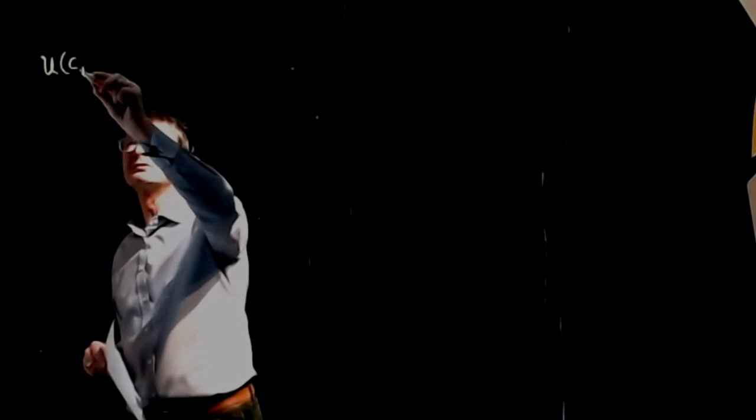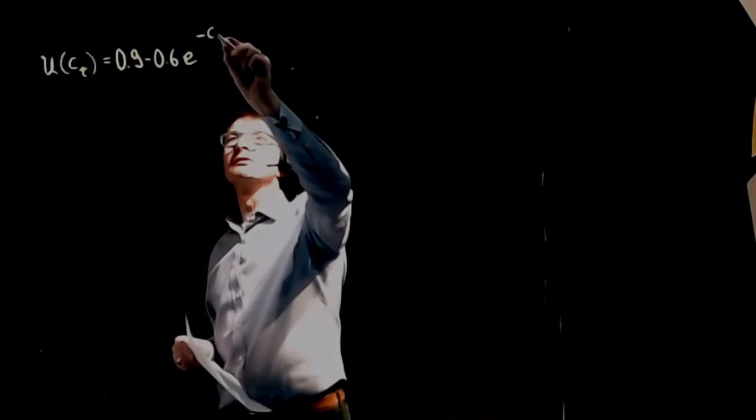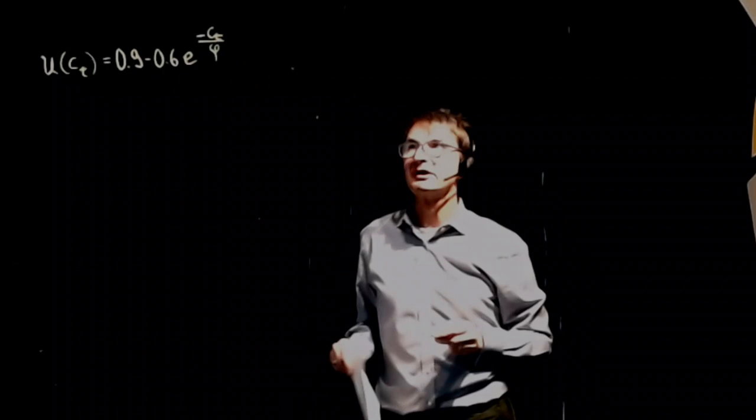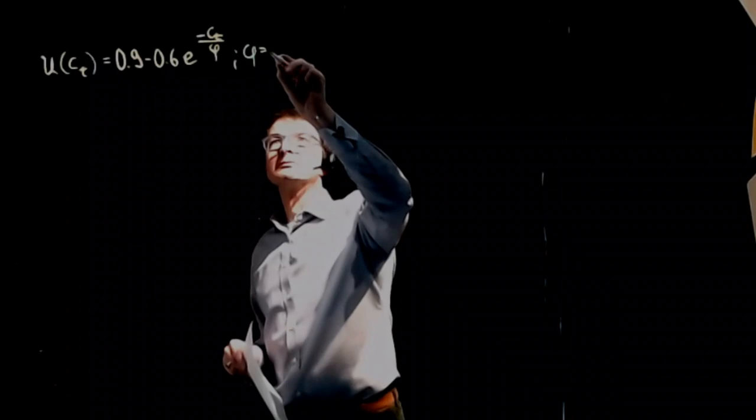The starting point for our thoughts is a utility function. And here I have a very special utility function for you. The utility U of consumption C in round T should be given by a constant 0.9 minus 0.6 times e to the power of minus C_T over phi. Phi is just the Greek letter, a parameter here, and we might denote phi just by 100.